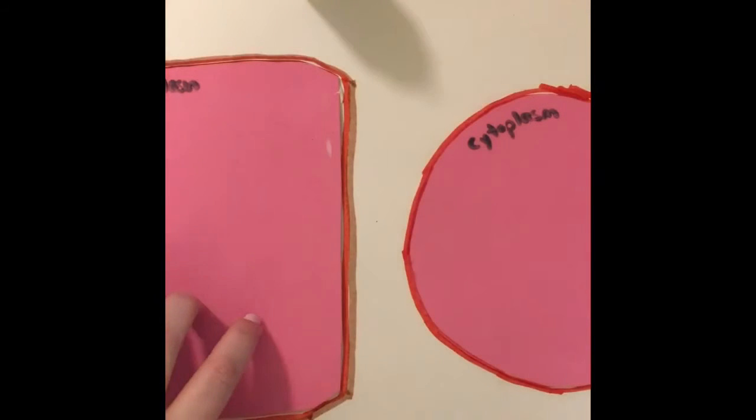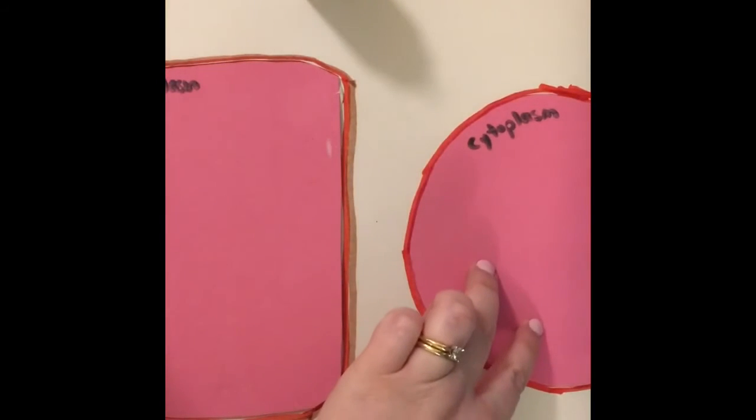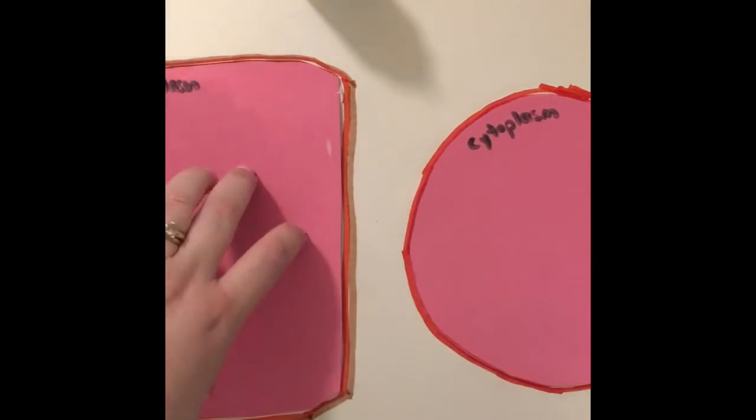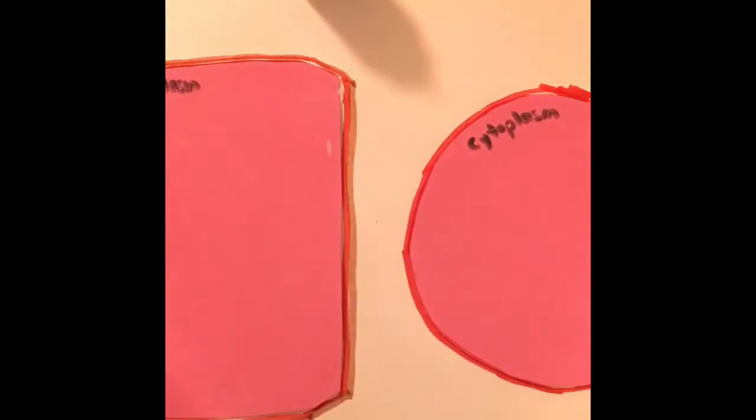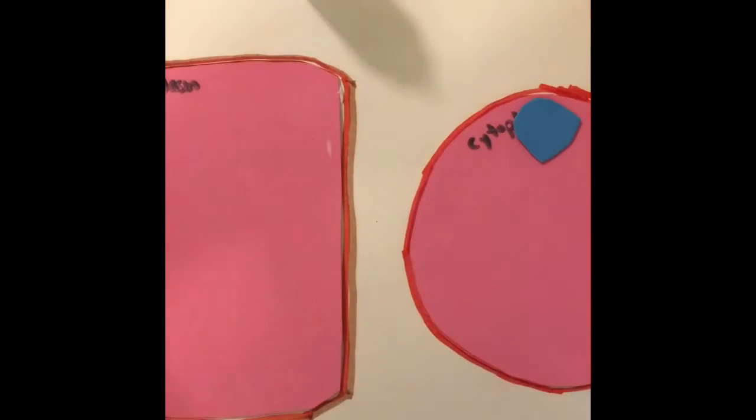Remember that in the plant cell you have a larger vacuole than you do in your animal cell, so you can make two or three smaller vacuoles for your animal and a much larger one for your plant. So take your foam and carefully cut out whatever little shapes you'd like. I'm going to use circular-ish shapes for my animal cell.